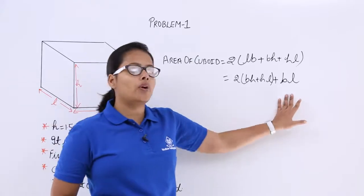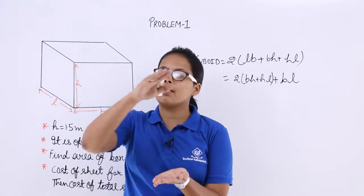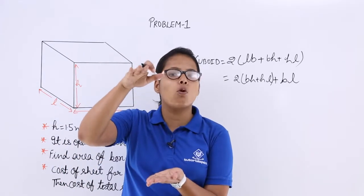Why? Why B into L? Because there is only bottom face. There is no top face because it is open at the top. That's why I have excluded BL from this formula.